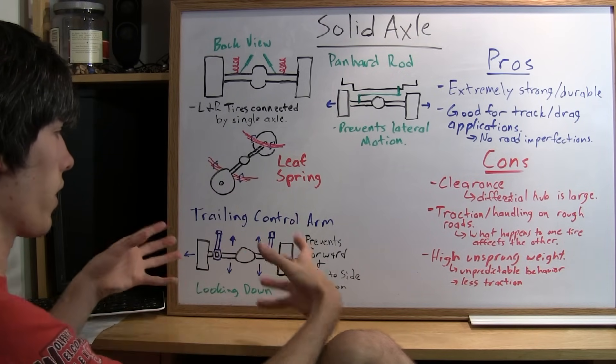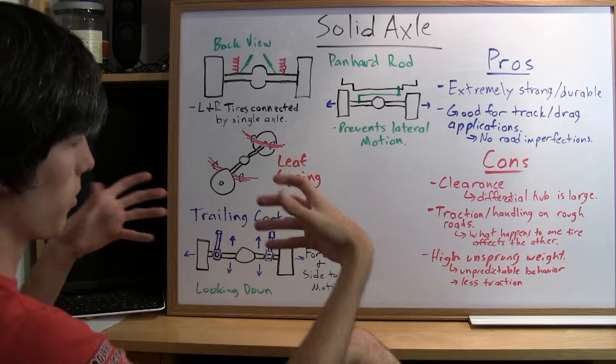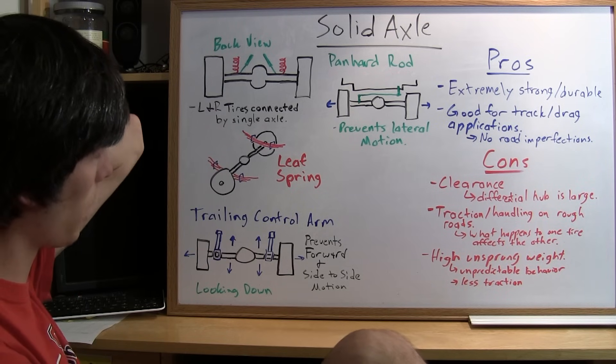With these connections here, this will prevent any side-to-side motion and any forward or backward motion. This is looking down on it. It doesn't prevent that vertical motion. These are joints so that it can move up and down.